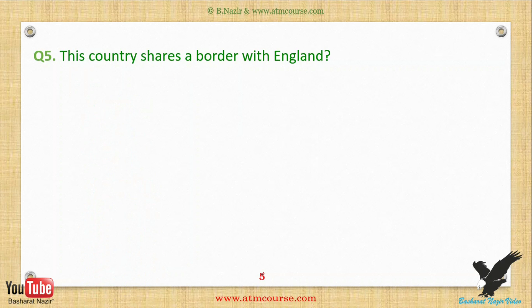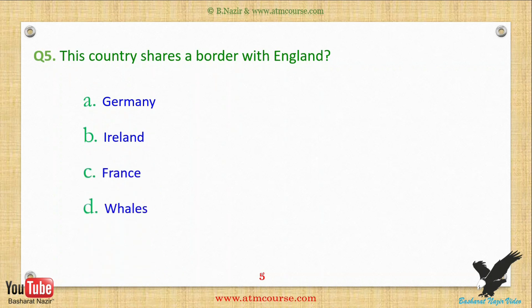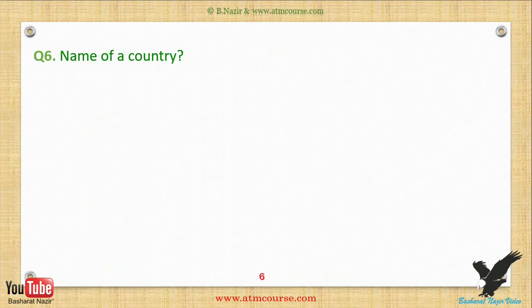Question five: This country shares a border with England — choose from one of these answers. Question six: Name of a country — choose from one of these answers.